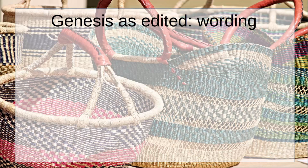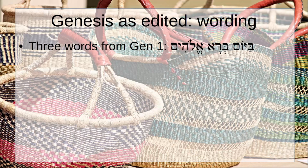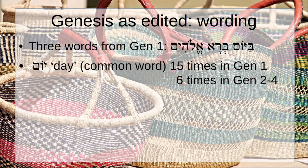Just take three words from Genesis chapter 1: 'Yom,' 'Barah,' 'Elohim.' The first one, 'Yom,' is a really everyday word — it's the word for 'day.' 'Yom' occurs 15 times in chapter 1 through to verse 4 of chapter 2. In chapters 2 to 4, the word 'Yom' only occurs 6 times over three chapters. But when we get into chapter 5, it occurs 12 times. It seems as though the narrator of chapters 1 and 5 likes the word 'Yom' much more than the narrator of chapters 2 to 4 did.